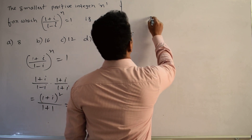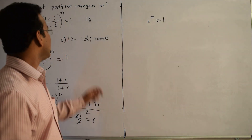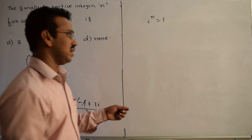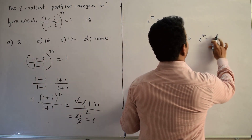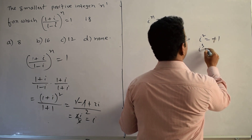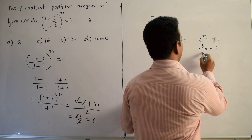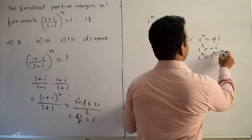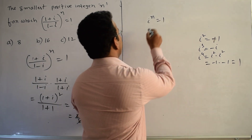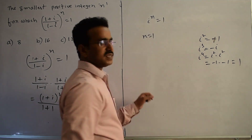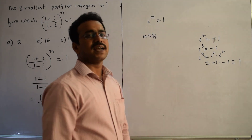So the given equation becomes i to the power n equals 1. We need the smallest positive integer n. We know i squared equals minus 1, i cubed equals i times i squared equals minus i, and i to the power 4 equals i squared times i squared equals (minus 1)(minus 1) equals 1. So for n equals 4, the equation is satisfied.